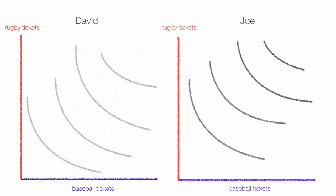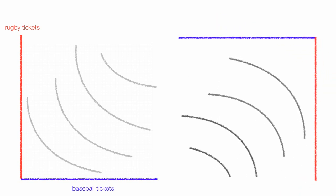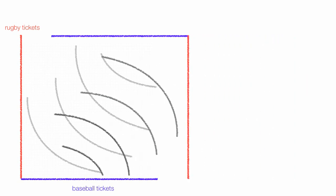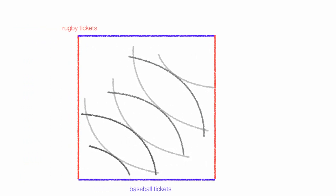Now if I take Joe's indifference map and I rotate it 180 degrees and I slide it over to the left, you'll see this is how we build the Edgeworth box diagram. Let me slide this to the middle of the screen.